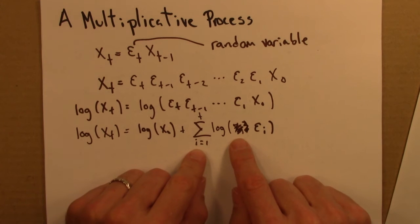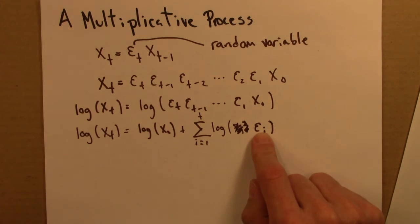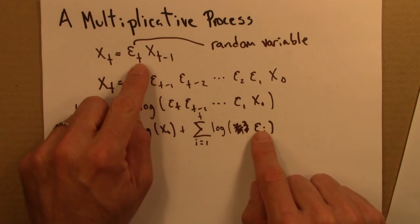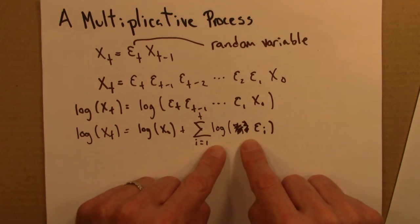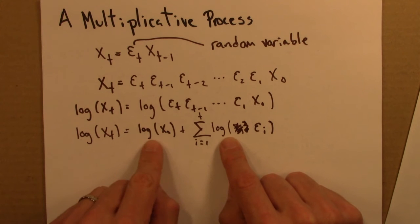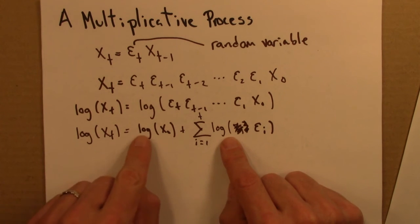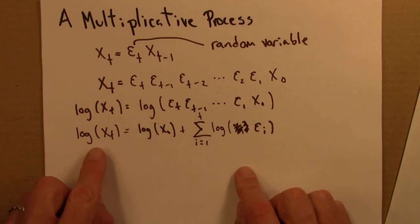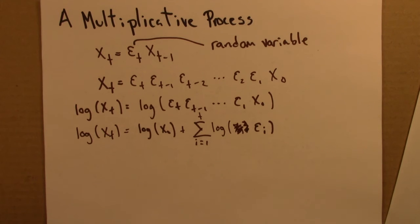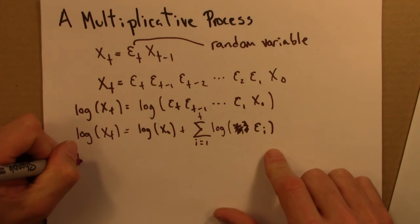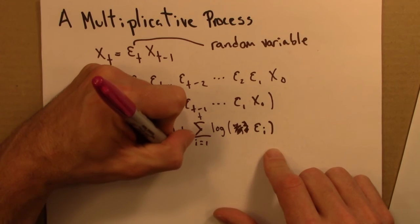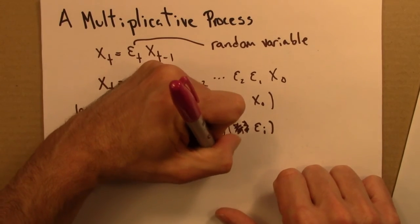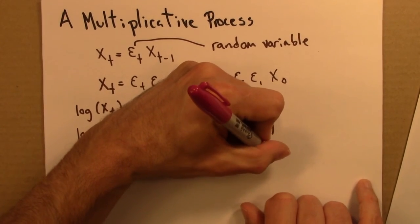And that's a statement that's independent of the distribution of epsilon themselves, as long as epsilon is reasonably well behaved and has a standard deviation and so on. So this says that as t gets large, this will be distributed according to a Gaussian, a normal distribution. As we add up more and more of these, this term becomes less significant. And the upshot is that the logarithm of xt is distributed according to a normal distribution. So log of xt is normally distributed.